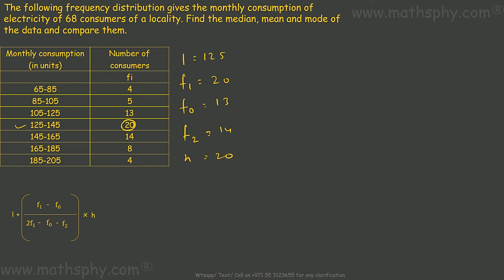H would be 20. Now solving this, mode comes to 135.76. That's the mode for this data. It means 135.76 units have been consumed by most of the consumers.